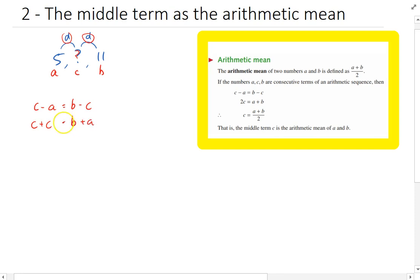Now c plus c is just 2c, and that's still b plus a. And now if I want to know c, I just need to divide both sides by 2, b plus a over 2.